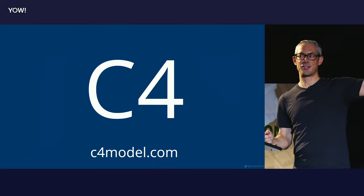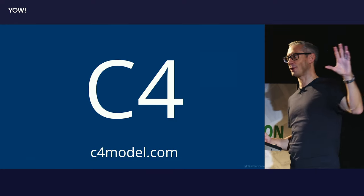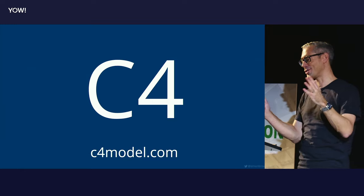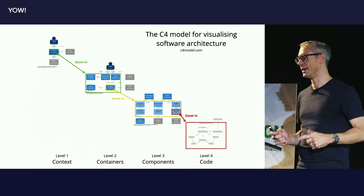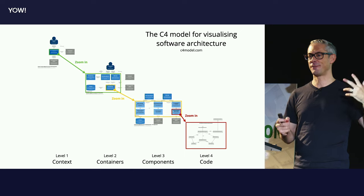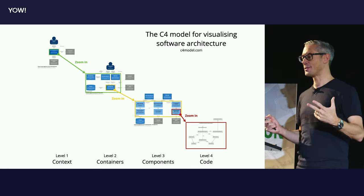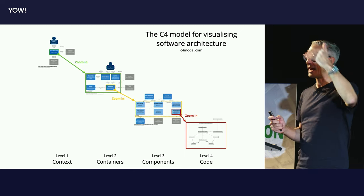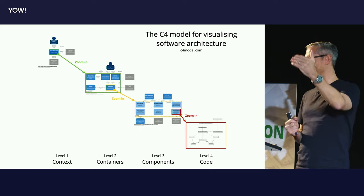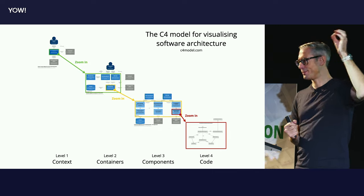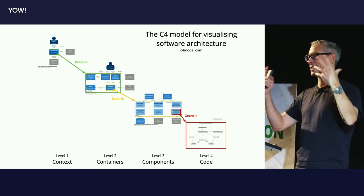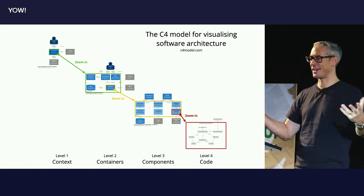If you want more information, you can go to c4model.com. Here's the quick two-and-a-half-minute abridged introduction. The C4 model is essentially a hierarchical set of architecture diagrams at different levels of abstraction. System context diagram — you zoom in, you show containers. By container, I don't mean Docker here. There's nothing to do with Docker, I'm sorry.